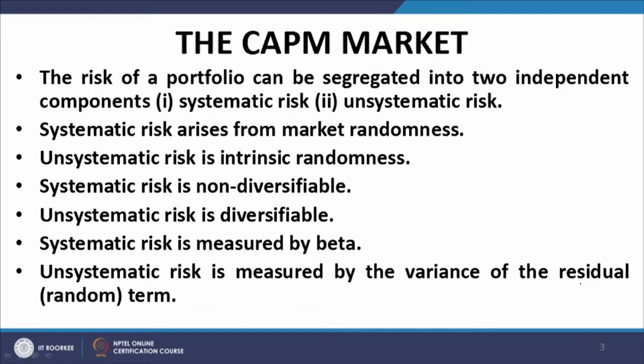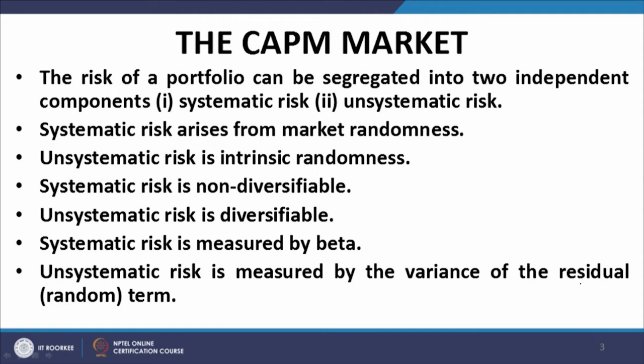Systematic risk is the risk that percolates down to the individual security or the portfolio due to the randomness that prevails in market returns or market prices. Systematic risk is that component of risk which arises out of the randomness of the market and the correlations between the market and the respective securities constituting the portfolio. Unsystematic risk is intrinsic to the various securities that form the portfolio — it is independent of the randomness of the market. Systematic risk is non-diversifiable because it relates to a common index, which is the market index, whereas unsystematic risk can be diversified by having a collection of securities to form a portfolio.